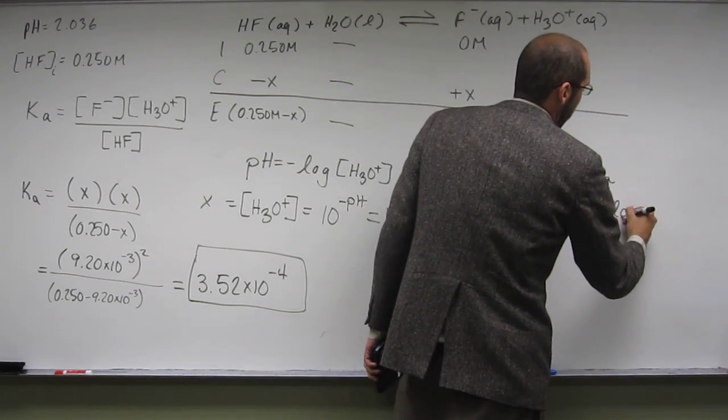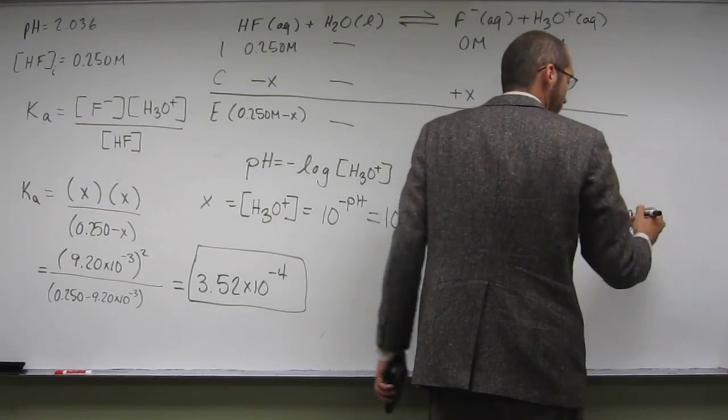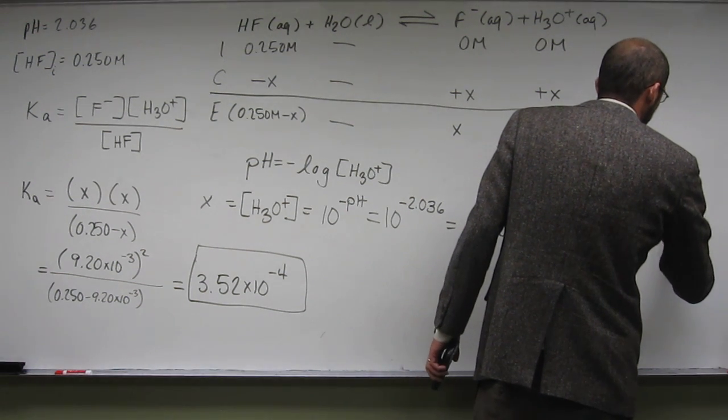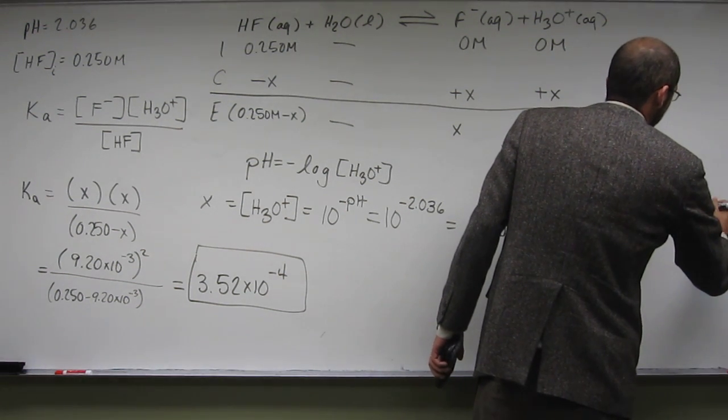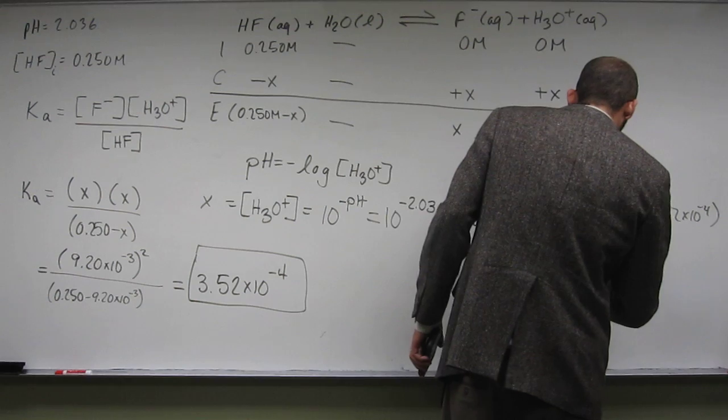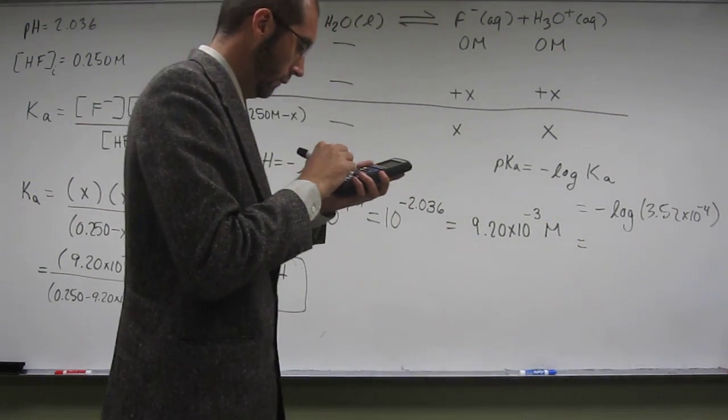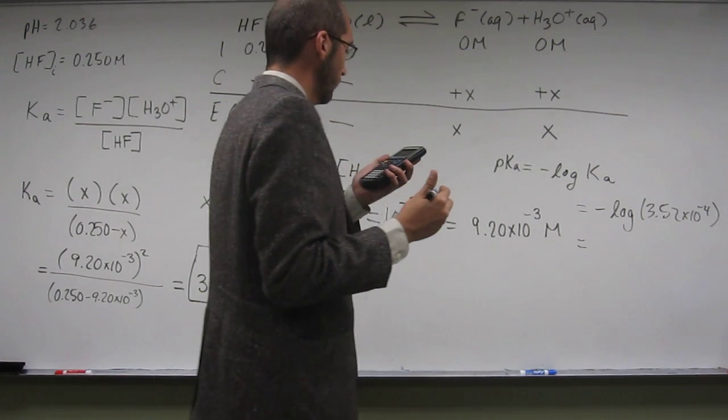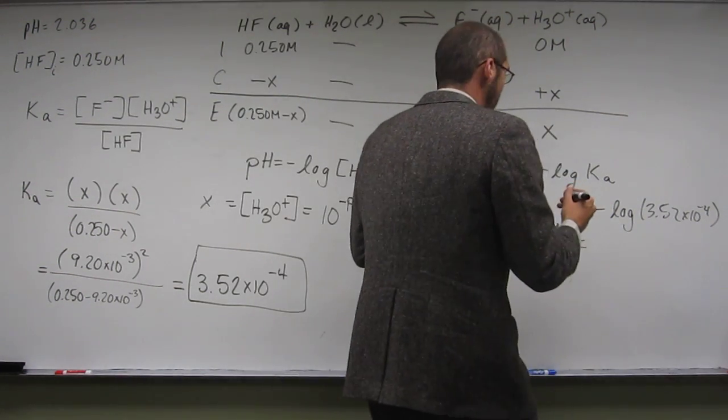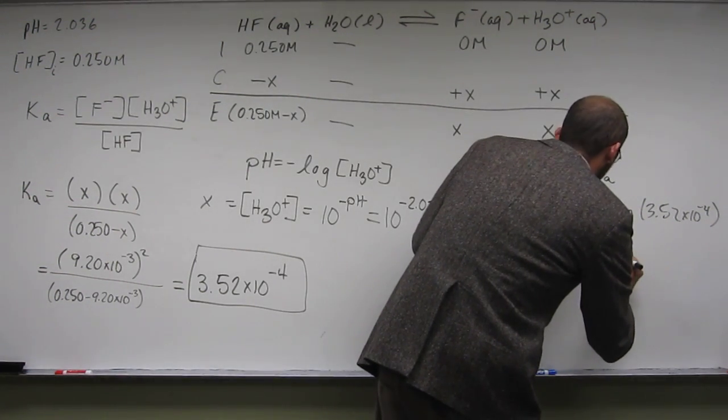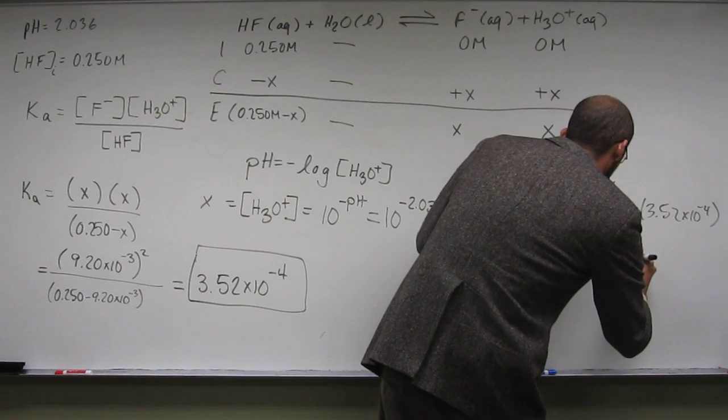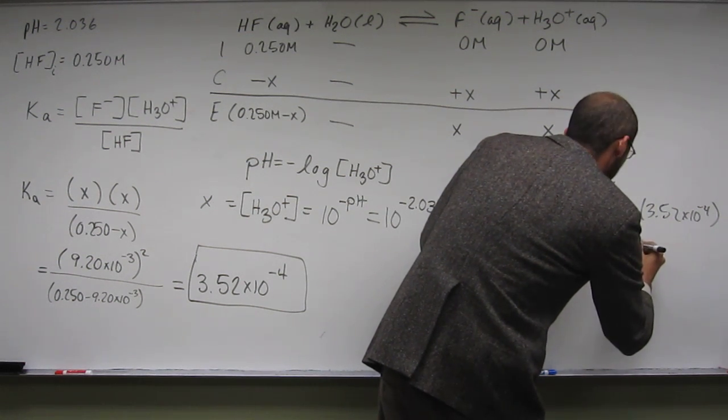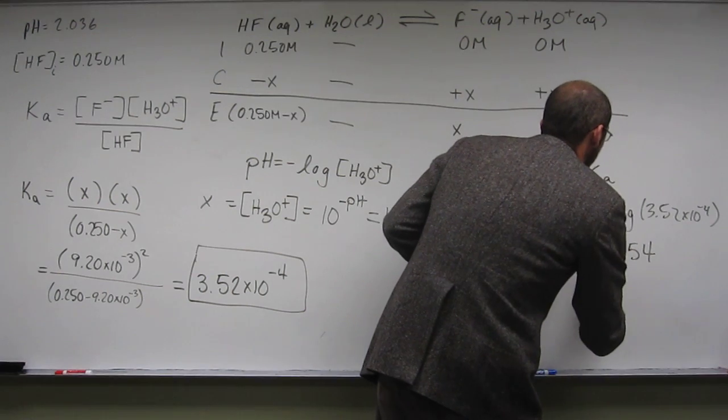that's going to be the negative log of the Ka. So the negative log of that number that we just figured out, 3.52 times 10 to the negative 4.